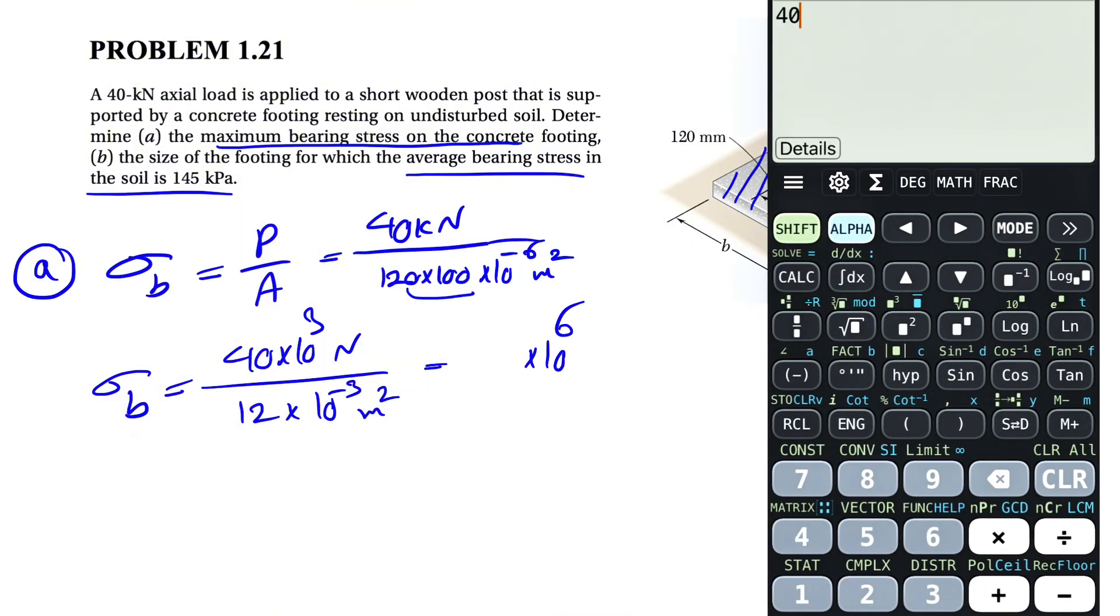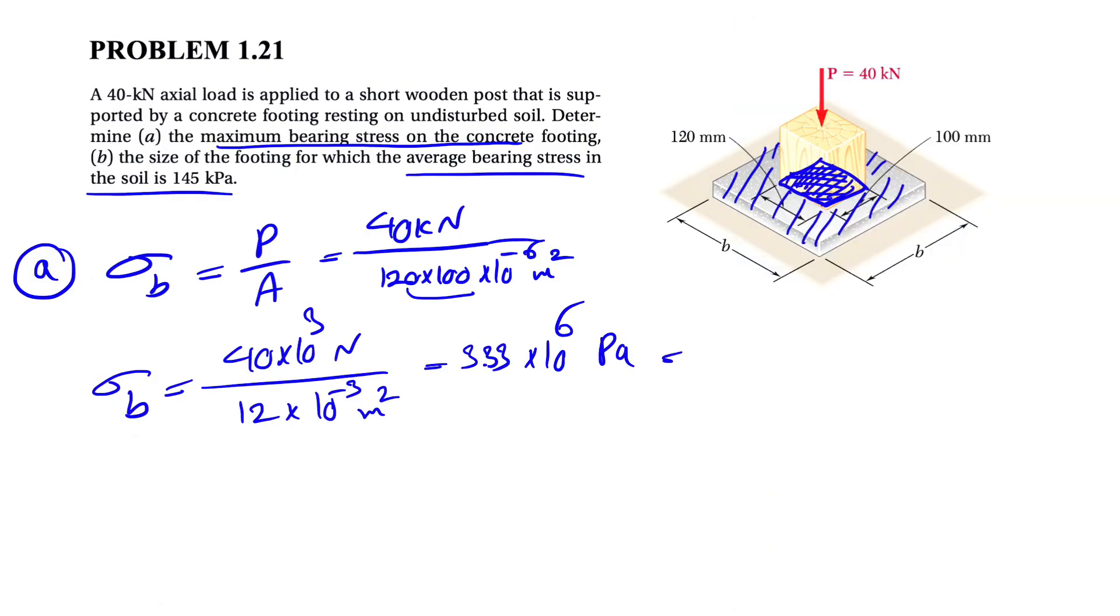Let's divide 40 by 12. That's going to be 3.33 in Pascals or 3.33 megapascals. So that's the answer for part A where we need to find the maximum bearing stress on the concrete footing.